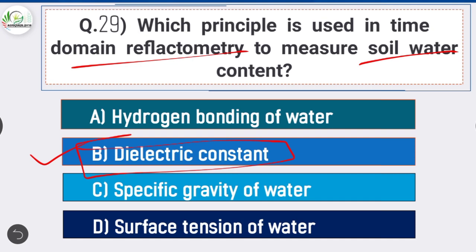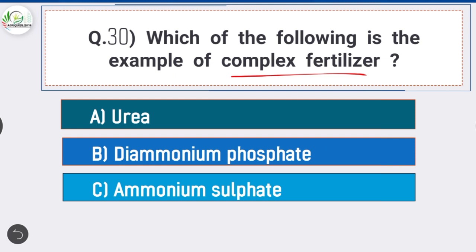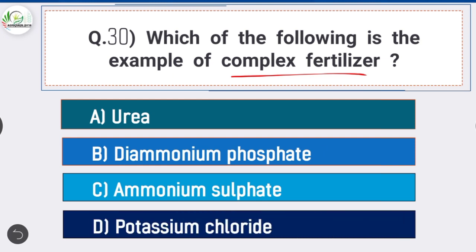Question number 30: Which of the following is an example of complex fertilizer? Answer is option B, diammonium phosphate. Diammonium phosphate is an example of complex fertilizer.